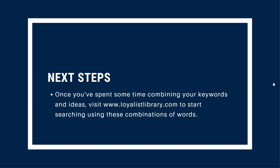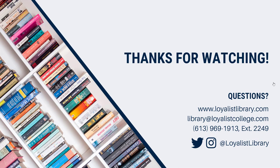And that's it! You've created your search strategy, and now you have multiple combinations of search words that you can use to start looking for information. You can visit loyalistlibrary.com and start typing these groups of words into Catalyst to see what kind of results you get. This video is one in a series that explores searching and research skills. The other videos will introduce you to the library's website and help you get started with Catalyst. We've also created a handout that you can use to guide you through creating your own search strategy. If you have questions or need extra help, get in touch with us using the contact information below.